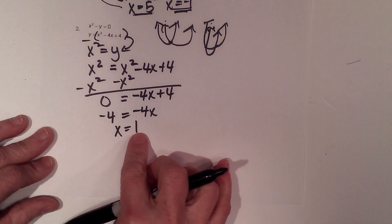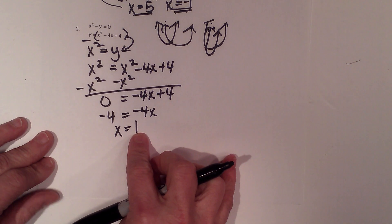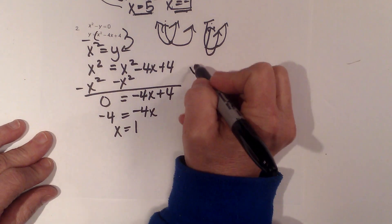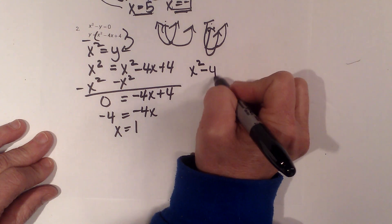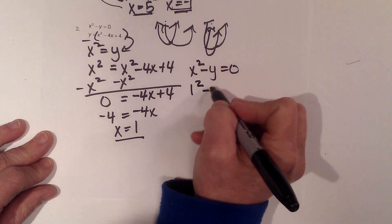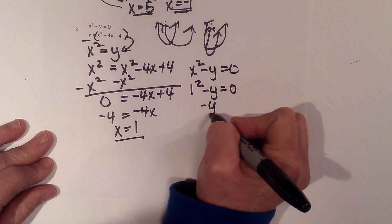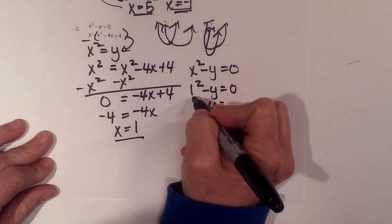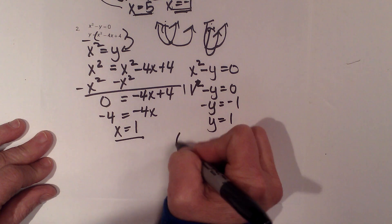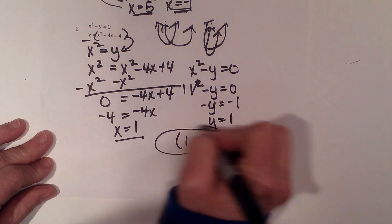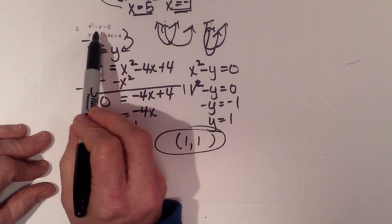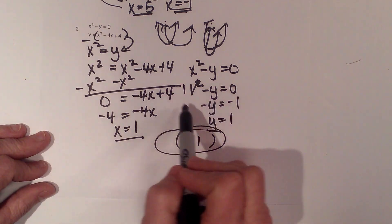So we've got an intersection point, one intersection point. Now to find the y coordinate, I'm going to plug in 1. I've got x² - y = 0. Our x value is 1. So 1² - y = 0. -y = -1, so y = 1. So what's that ordered pair? (1, 1). And that's the intersection point between the parabola and the parabola. So we have one intersection point.